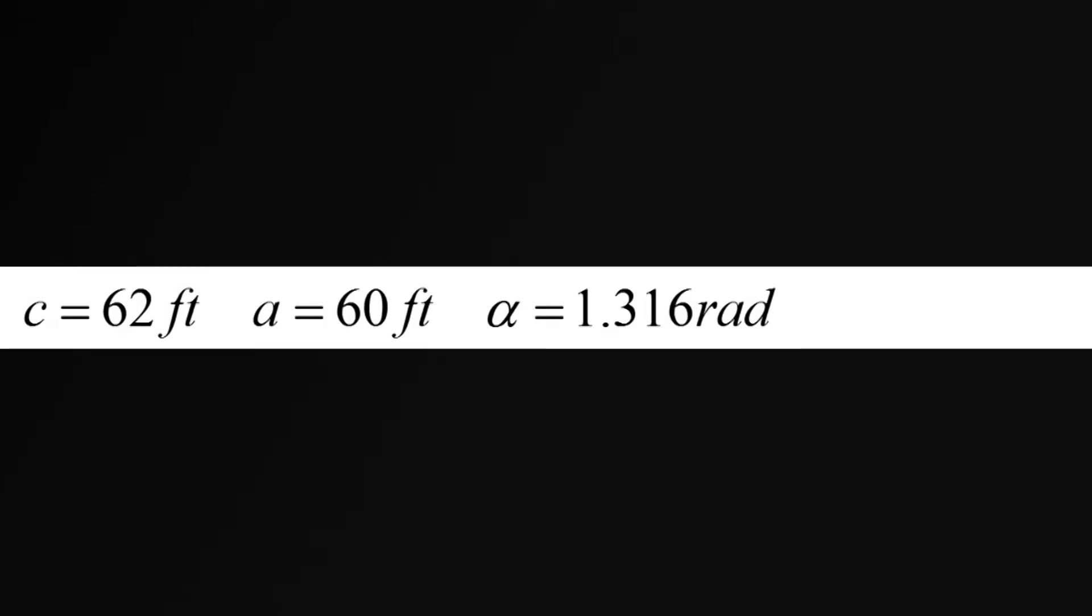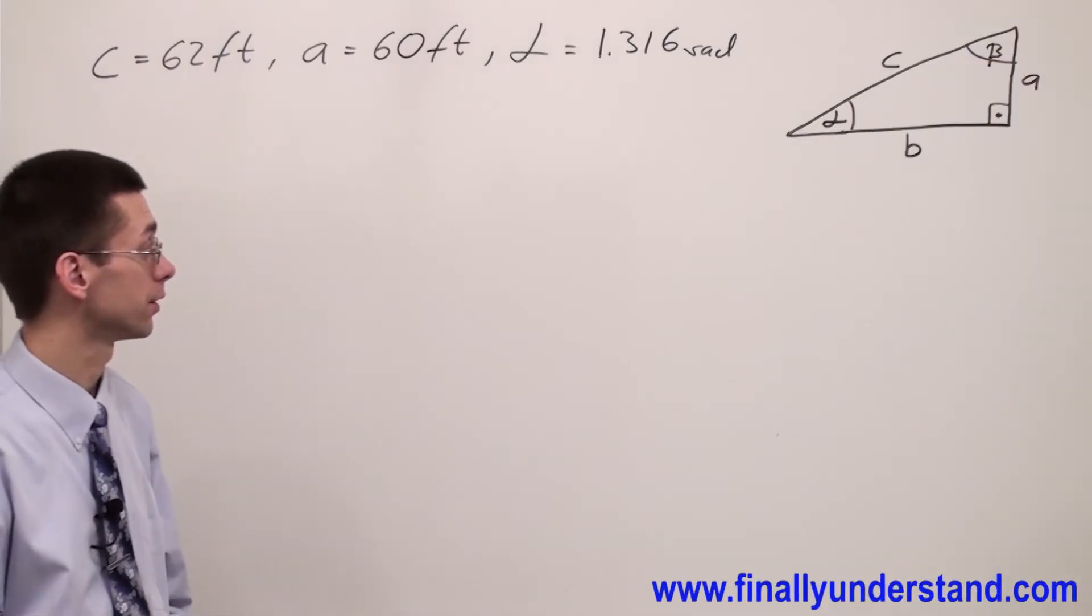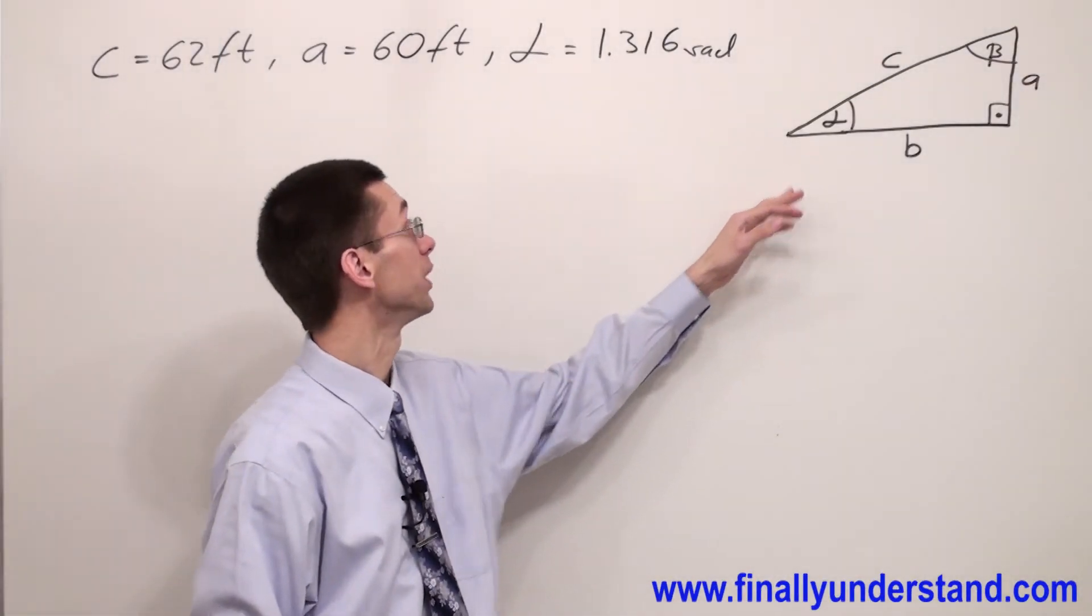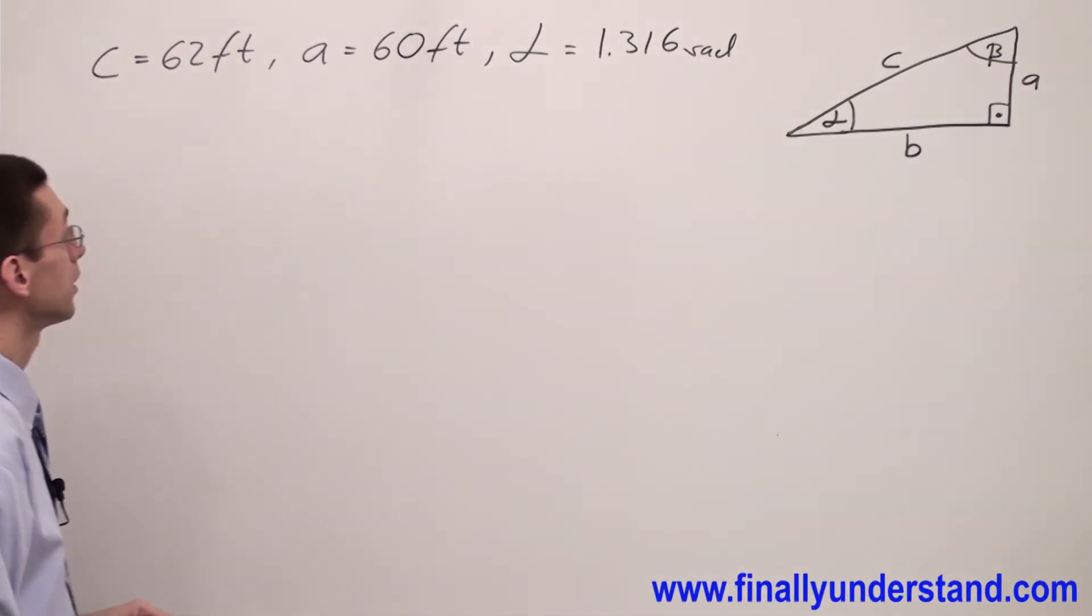Let's take a look at this example. This time we're supposed to find the length of side B and angle beta.